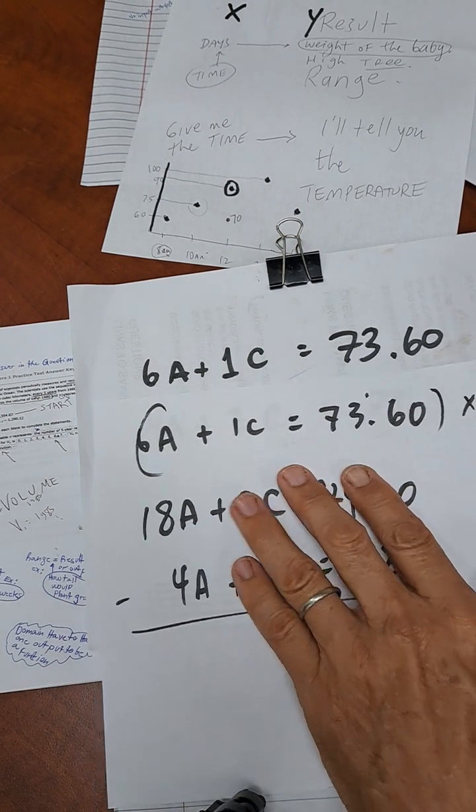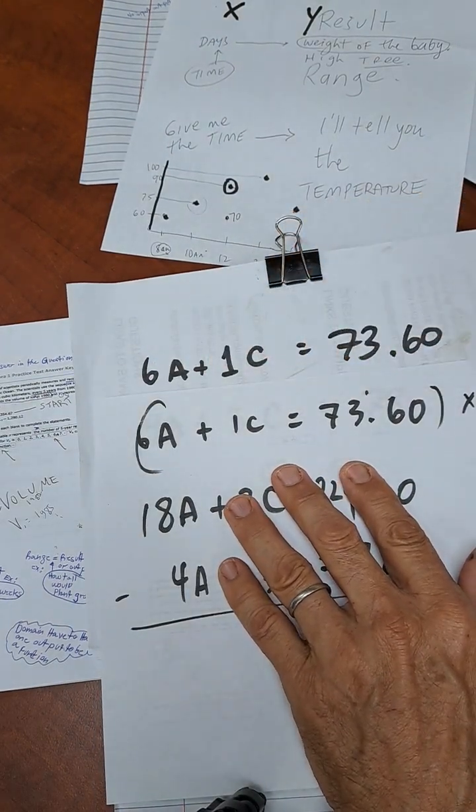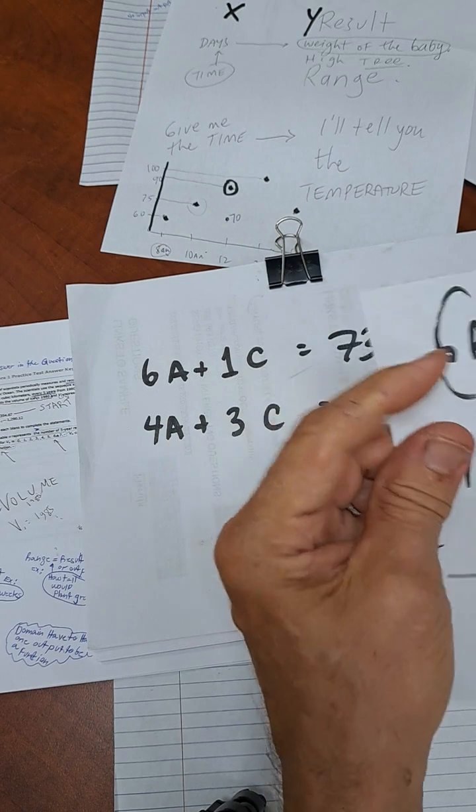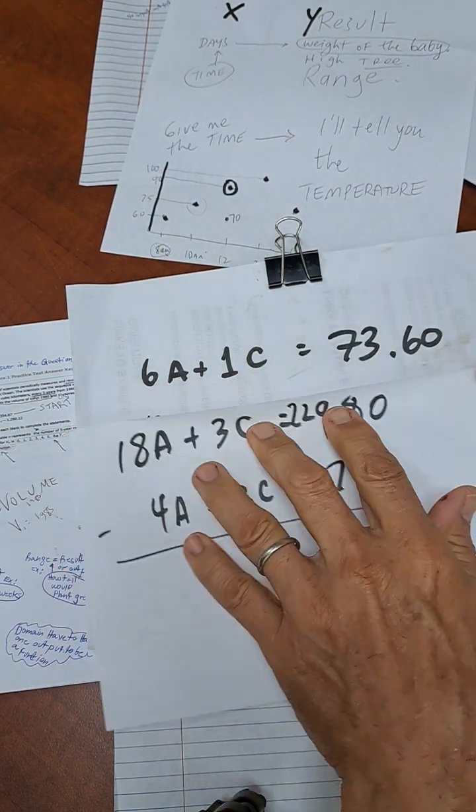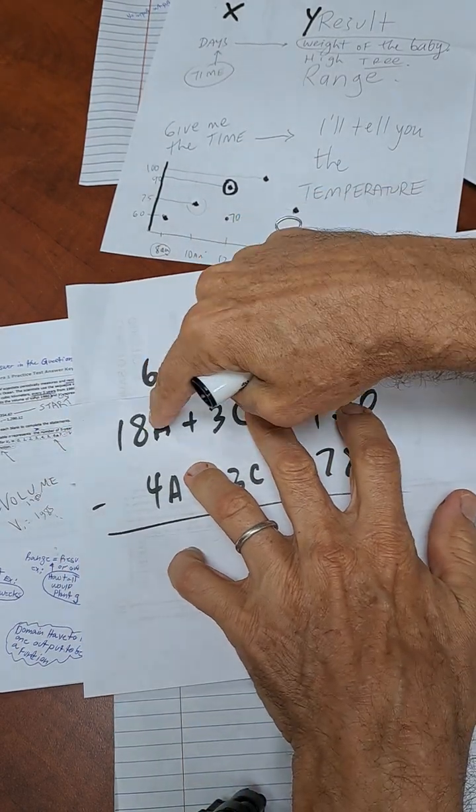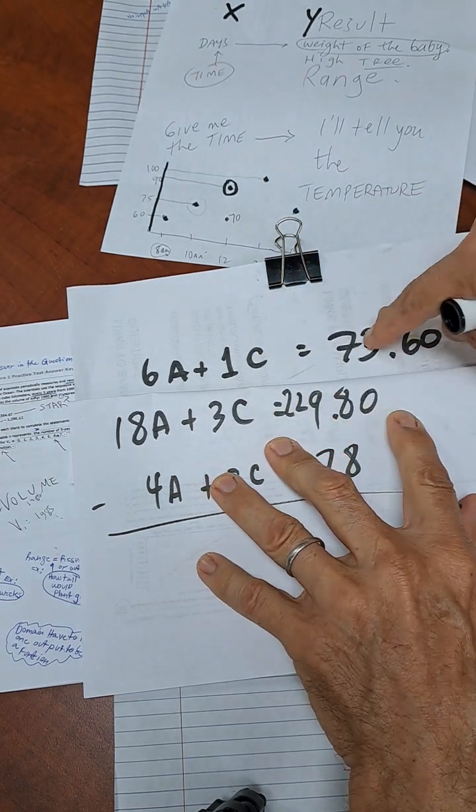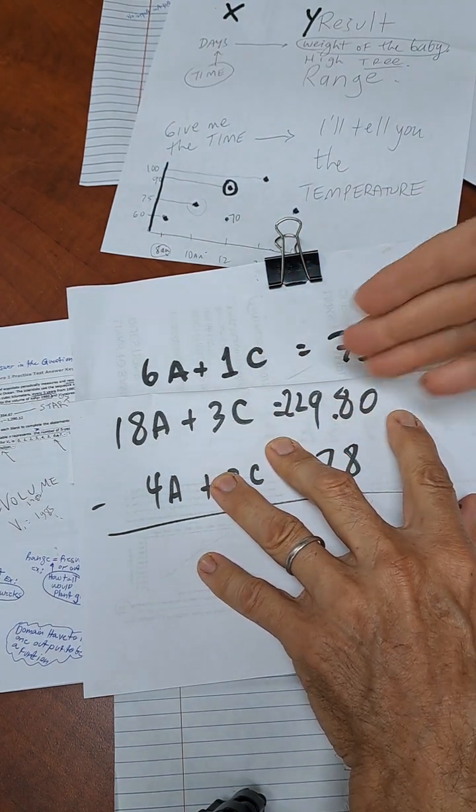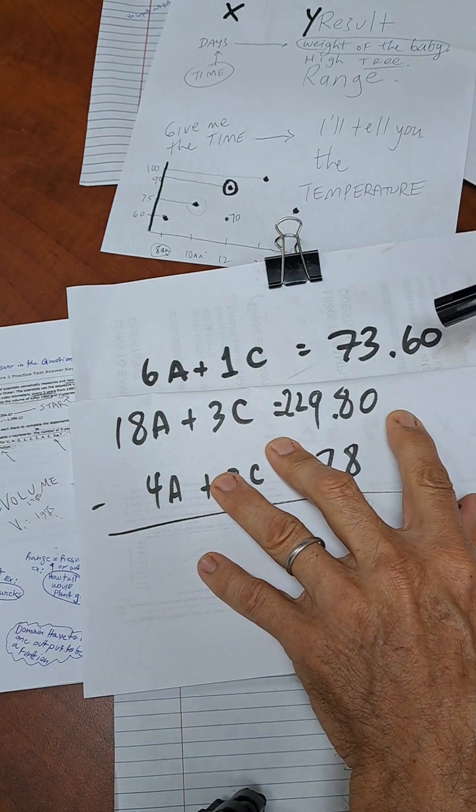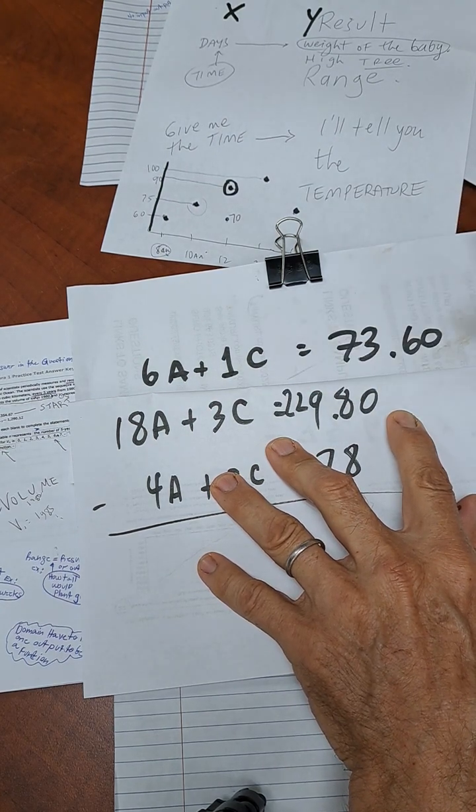So when I take this and multiply it all by three, I'm going to get, multiply this by three means 18A. This by three makes it 3C. And then multiply this by three. That's how I got this silly thing. So I'm multiplying it all by three.